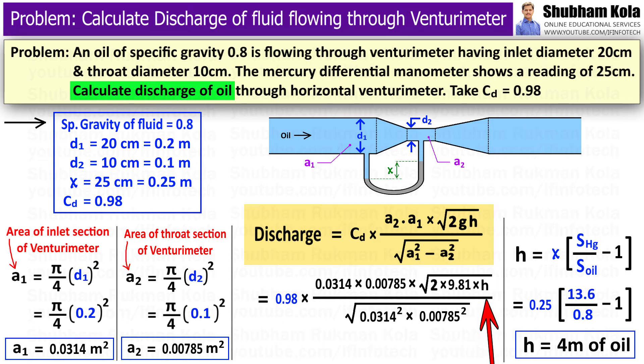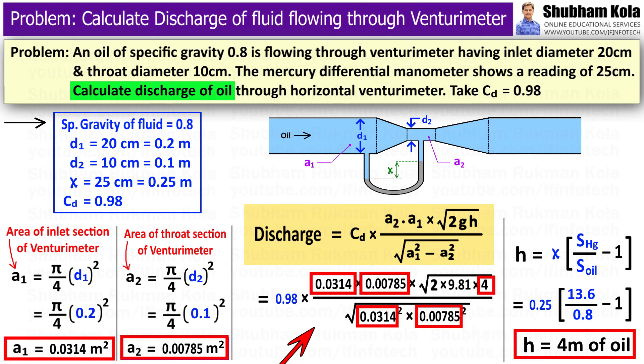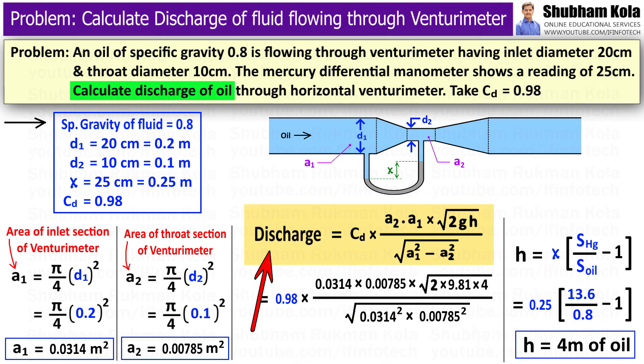Now I will put this calculated value of small h in the discharge formula. We have found all the values needed to calculate discharge. Therefore, the discharge of oil through Venturimeter is 0.0704 m³ per second.